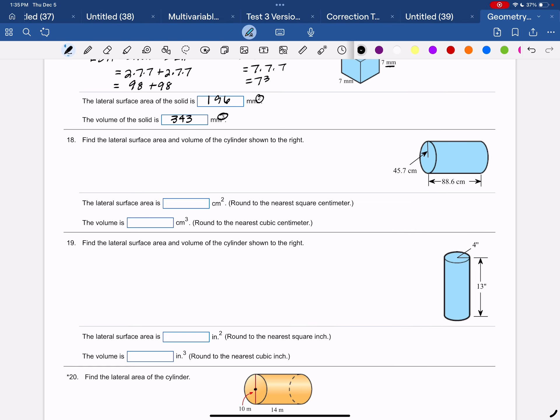Example 18. Find the lateral surface area and the volume. So for a cylinder, just the lateral surface area is 2 pi RH.